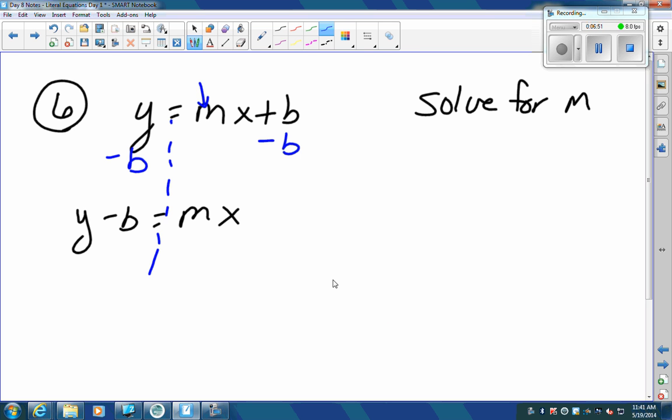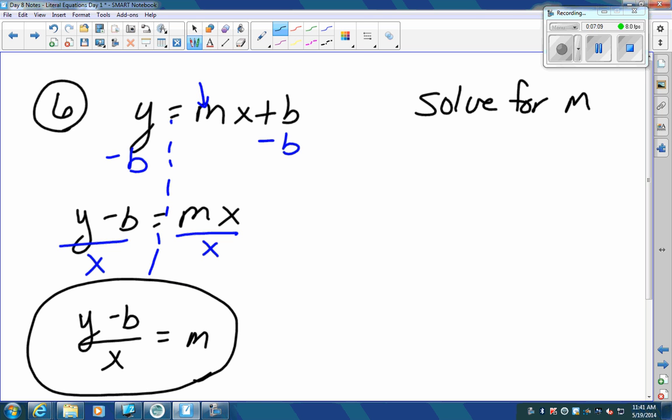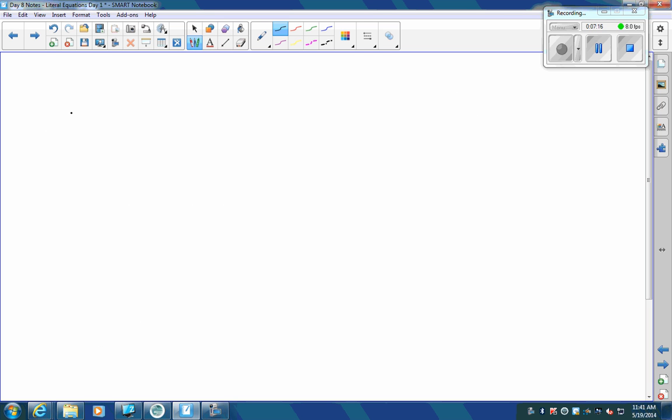Now to get M by itself, divide by X. You get Y minus B divided by X. That equals M. All we're doing is rearranging. Next, number seven.